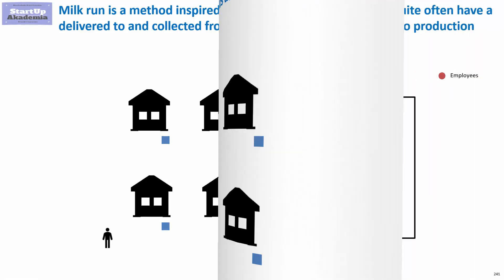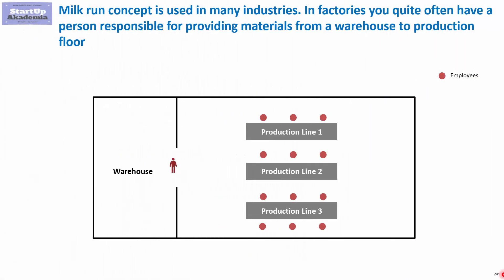Let's look at an example in a production setting. In a factory, we want to deliver certain things from the warehouse to specific places on the production line. We create a fixed route where the milkman goes through each position, leaving certain things there and picking up others, and it would roughly look like this.